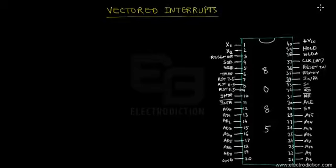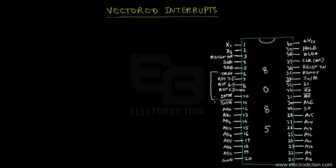Welcome to a tutorial on the 8085 vectored interrupts. As the pin diagram shows on the right, the entire set of interrupt pins for the 8085 extends from pin number 6 to pin number 10 as described earlier. These are the total set of interrupt pins of the 8085 microprocessor.